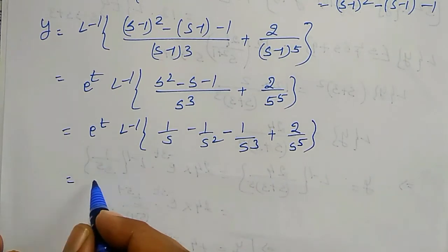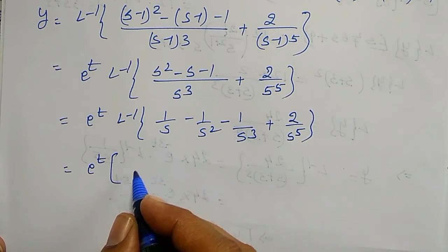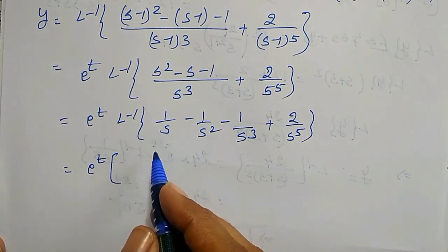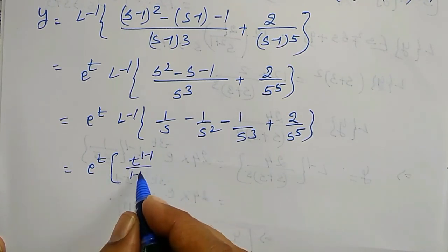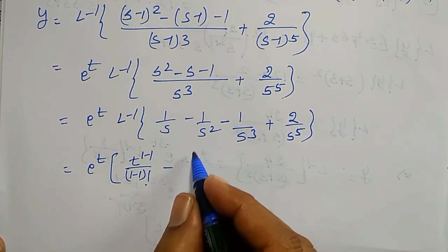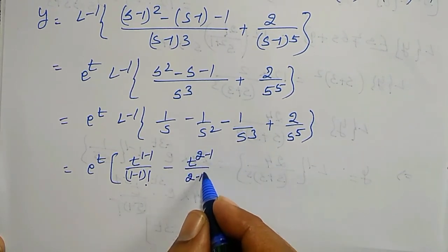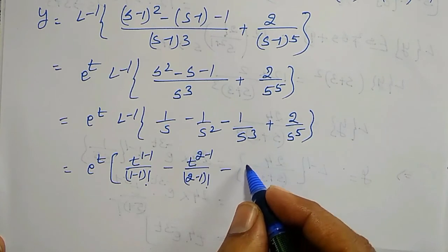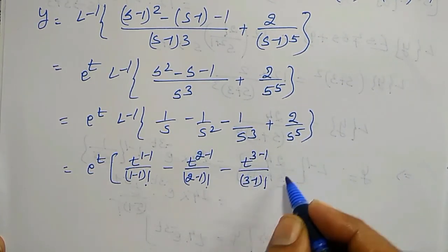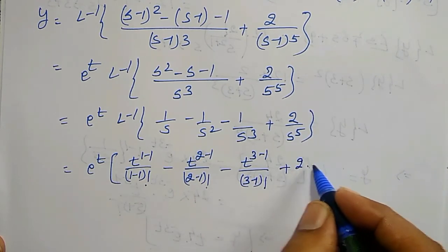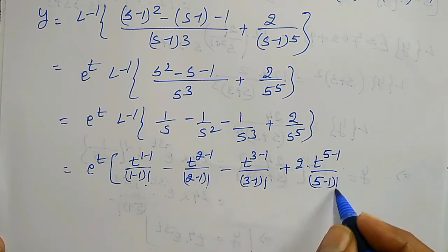Using the inverse Laplace Transform formula L⁻¹{1/sⁿ} = t^(n−1)/(n−1)!, the terms give: t⁰/0! − t¹/1! − t²/2! + 2·t⁴/4!, multiplied by e^t from the shifting property.